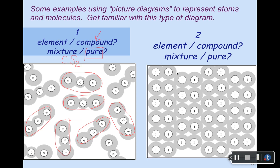Example number two on the right: element or compound, mixture or pure? If we analyze the contents, we see pairs of I — which must be iodine. They're arranged in a very orderly fashion, packed together similarly to the nitrogen we saw earlier. But there isn't anything in here except the letter I. So this must be something quite pure — they all look the same. And if there's only one chemical symbol in there, it has to be an element. This is a sample representation for iodine — a pure substance always has a chemical formula, and this is an element because there's only one substance represented.